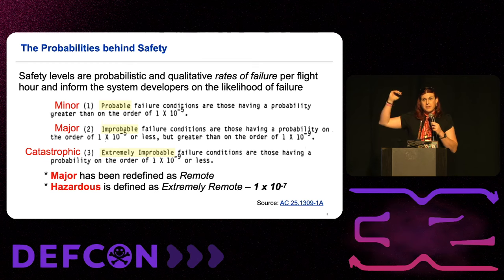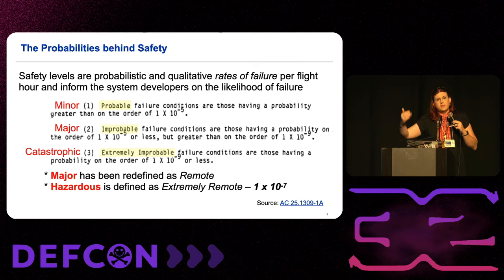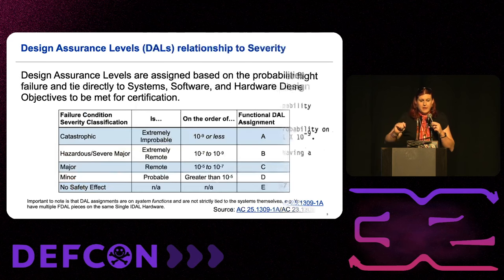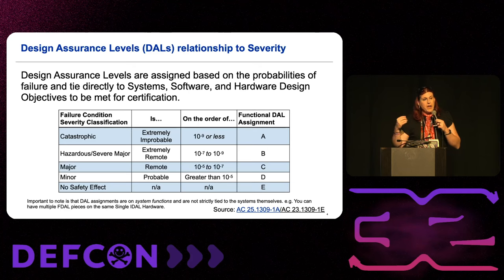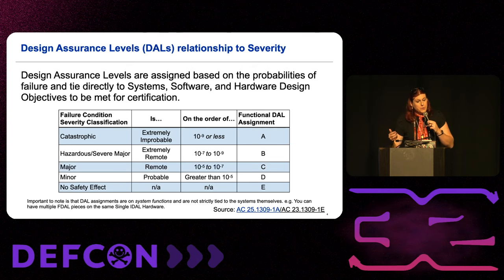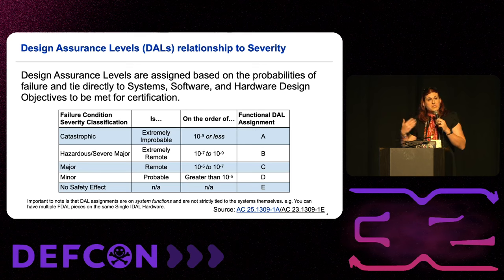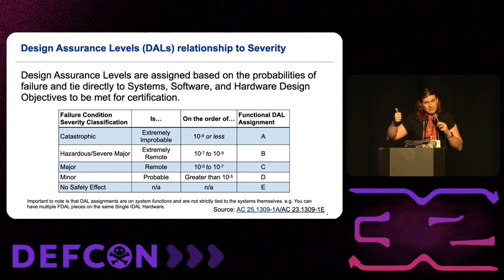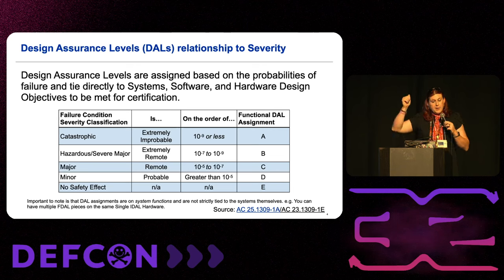Probabilities of 10⁻⁹ — think about the systems that you currently see in IT and how often they have to stay up and operate. Our stuff has to operate and not fail. The design assurance levels are a major component of how we develop these systems. You have a trace of failure conditions with severities, definitions, and probabilities that tie off to the functional DAL assignments. Whenever you're talking about aviation systems, if you see something that says it is a DAL-C system, it means that system has a major effect on aircraft operation, has a remote possibility of failure, and has a failure probability of somewhere between 10⁻⁵ to 10⁻⁷.